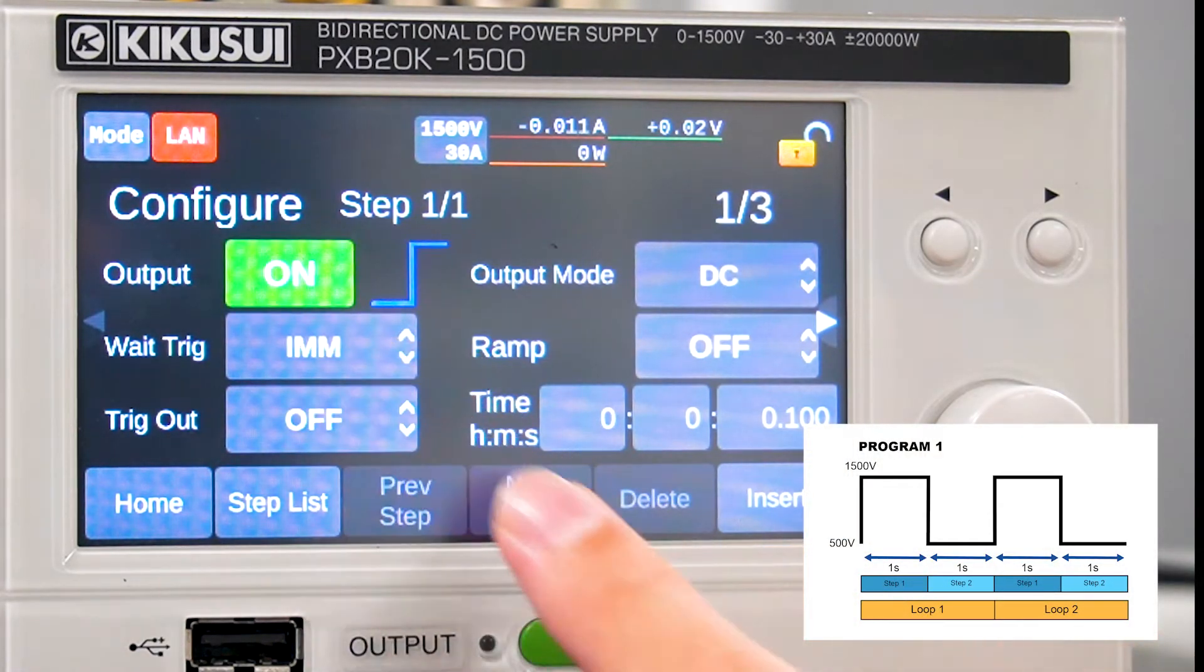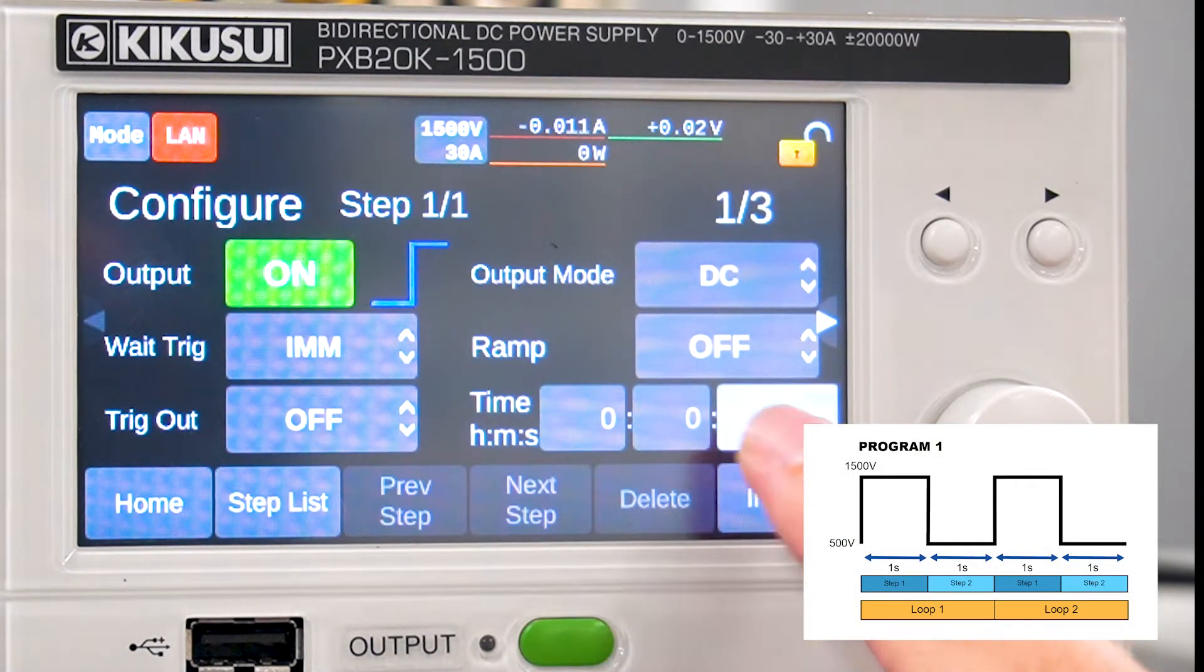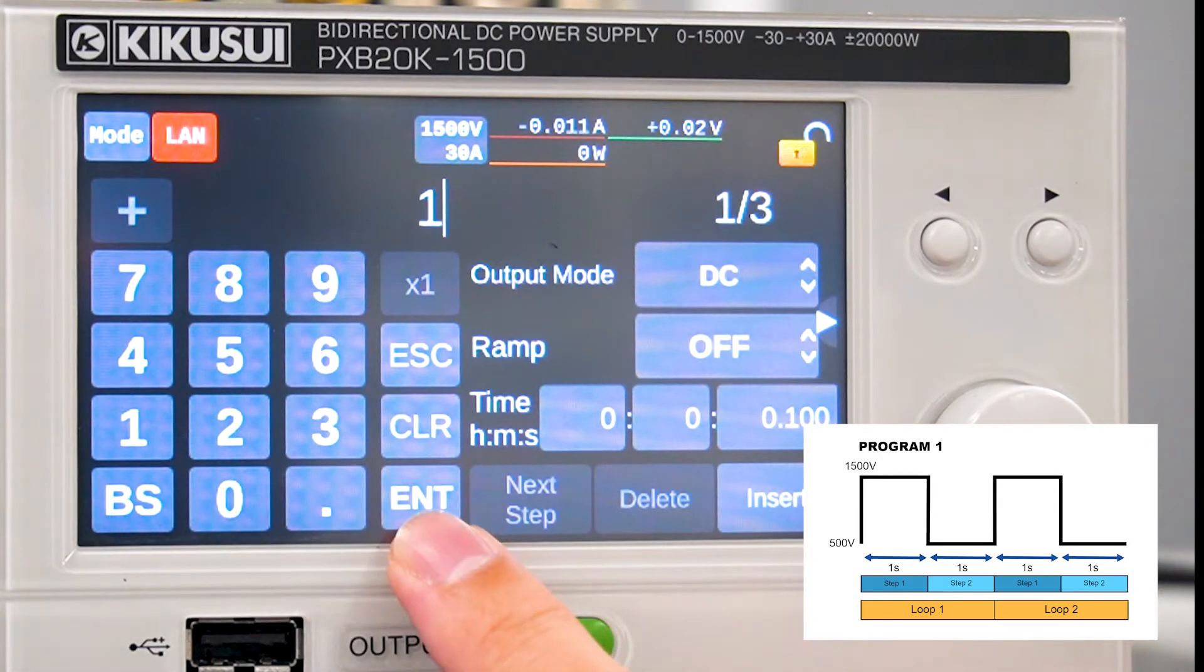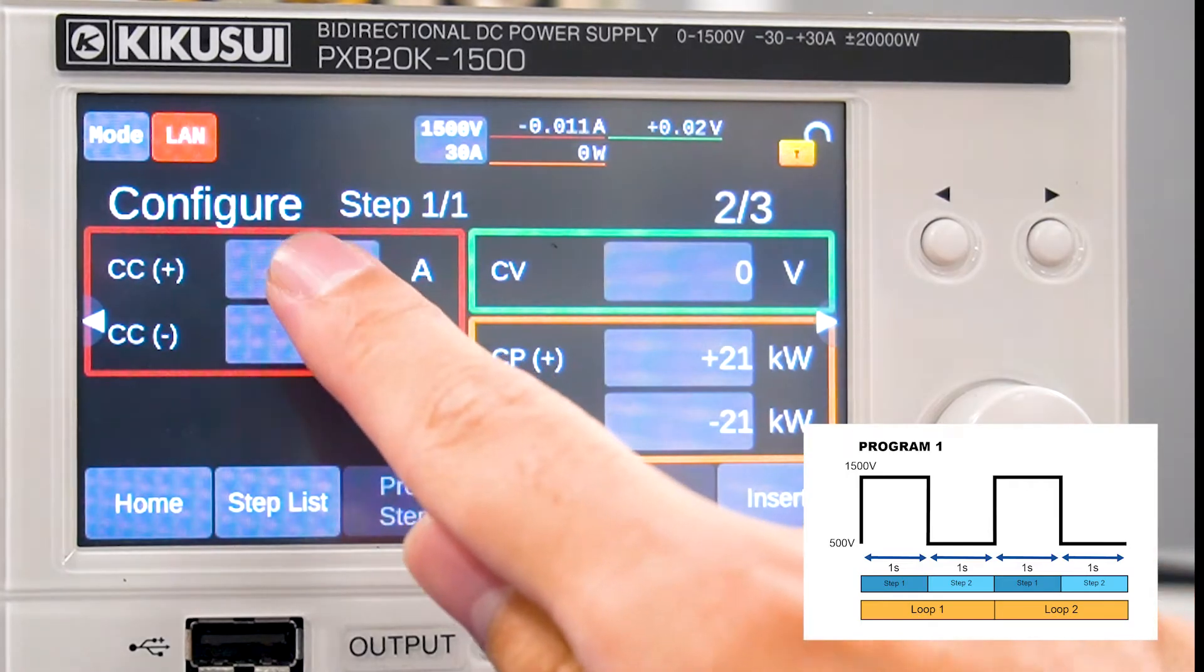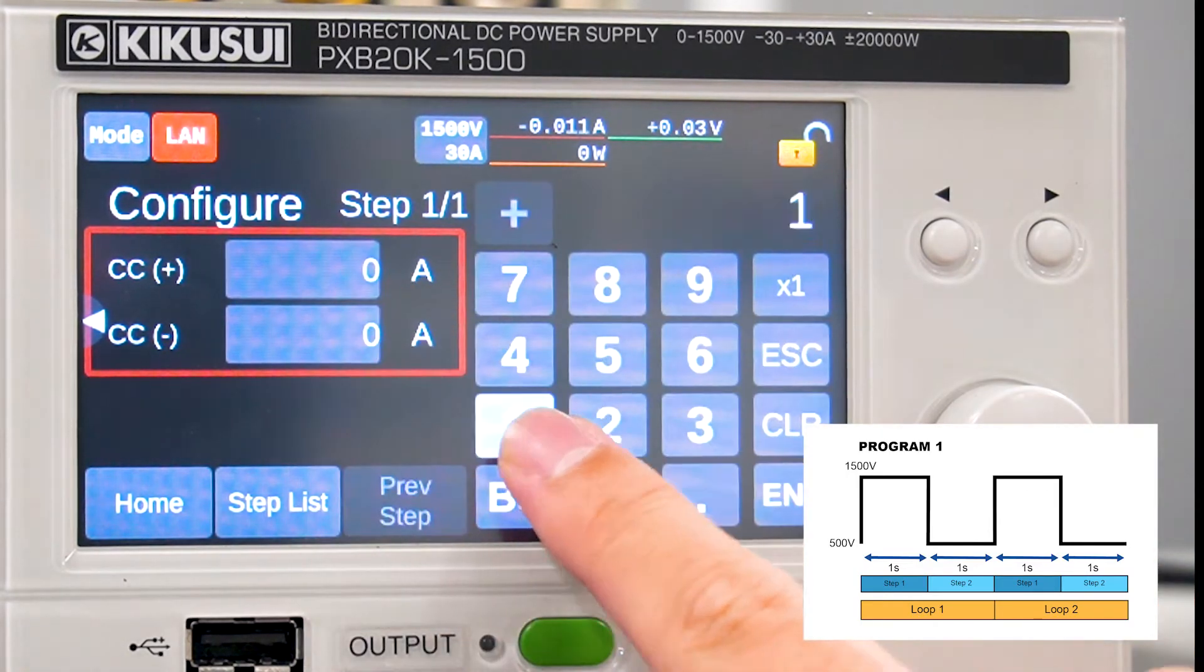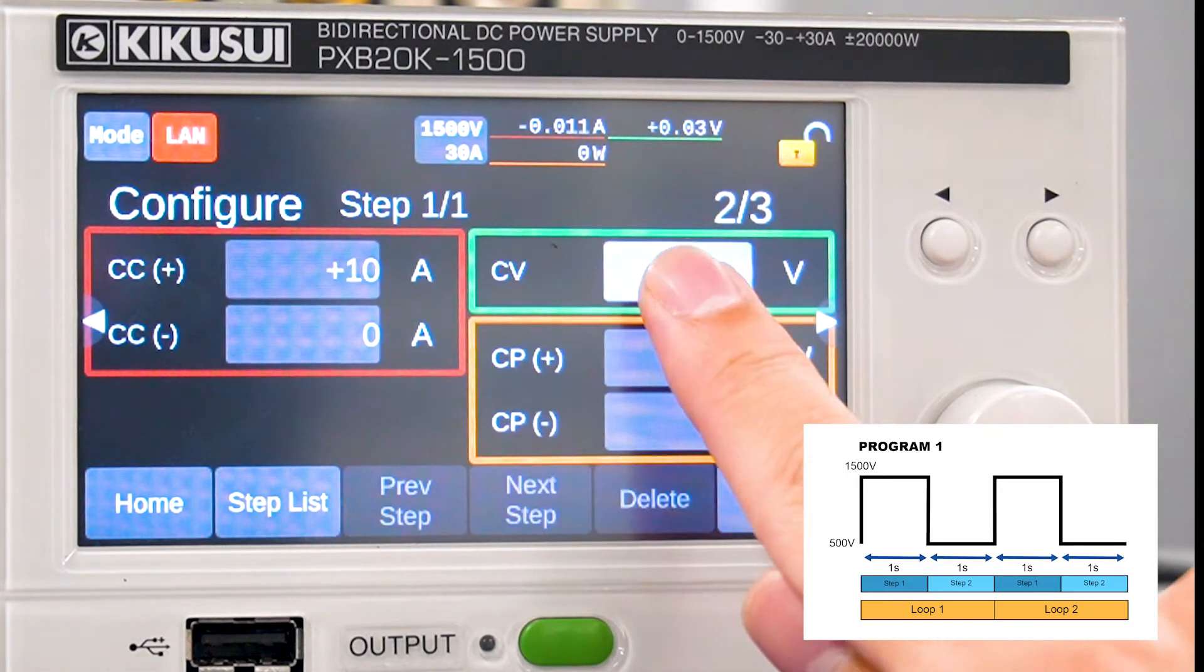Let's edit step 1. Set output on, time to 1 second, current to 10 amperes and voltage to 500 volts.